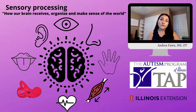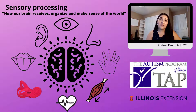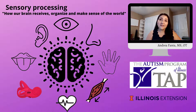Our brain gets this information and it's going to interpret them as sight, sound, smell, taste, and touch. In addition, we have our vestibular system that helps us primarily with balance, our proprioceptive system that helps us with body position in space, and also our interoceptive system that helps us with our internal organs.